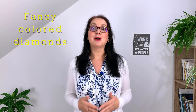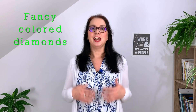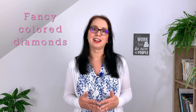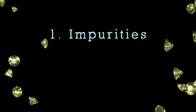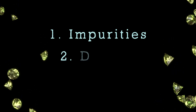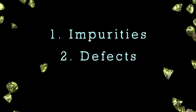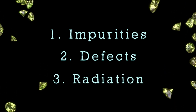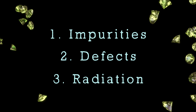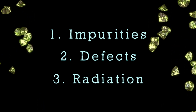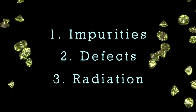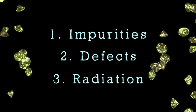We will talk about the fancy colored diamonds and see what gives them their color. There are different factors responsible for the different diamond colors. These include the presence of certain impurities like other chemical elements in the diamond structure, the presence of defects in the diamond lattice, and the effects of radiation on diamonds. We will analyze each of these three main causes and see which one is responsible for which natural fancy colored diamond.